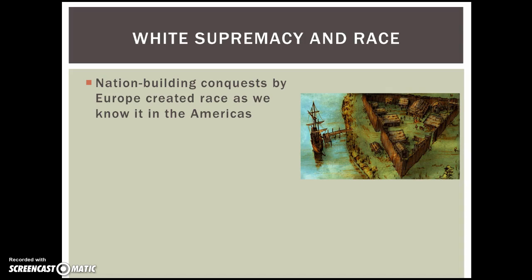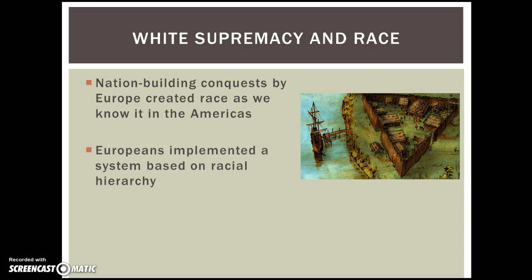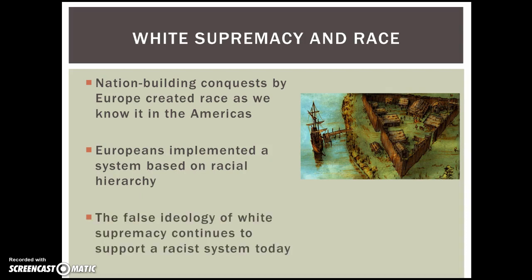These folks landed on lands where natives were already living fairly peacefully, engaging in their own societies, and of course created a hierarchy based on race. When they came across the natives, based on their Eurocentric beliefs, they saw these individuals as uncivilized. They saw them as needing father figures, as children that needed to be taken care of. At worst, they also saw them as savages that needed to be murdered. Slowly but surely, a system based on racial hierarchy — those who were civilized and those who were not, those who were European and those who were not — started to develop. This false ideology of white supremacy supported this system, and it continues to support our racist society today.